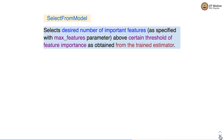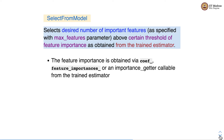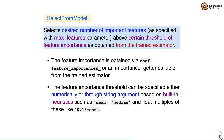Select From Model first trains an estimator on all features, then selects a desired number of features based on feature importance. The maximum number of features to select is specified via the parameter max_features. Feature importance is obtained via the coef_ and feature_importances_ member variables of the estimator class. We can also use the importance_getter callable from the estimator class. The feature importance threshold can be specified either numerically or through string arguments based on built-in heuristics such as mean, median, and float multiples of these heuristics like 0.1 * mean.